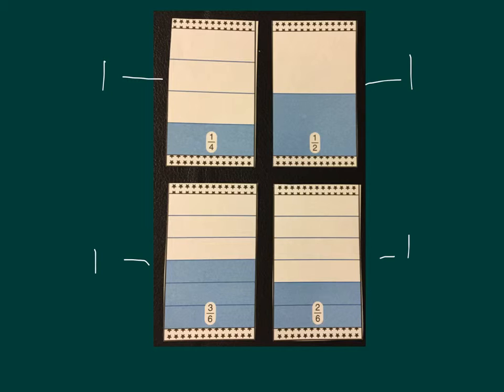The fraction on the back of these cards represent how much is shaded in. In this case, one-fourth represents one out of the four bars. One-half represents one out of the two bars. Three-sixths represents three out of the six bars. And two-sixths represents two out of the six bars that are colored in.